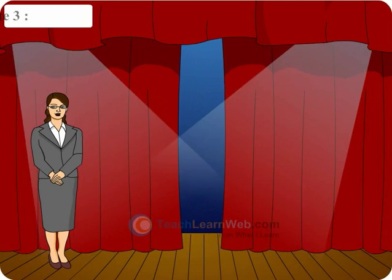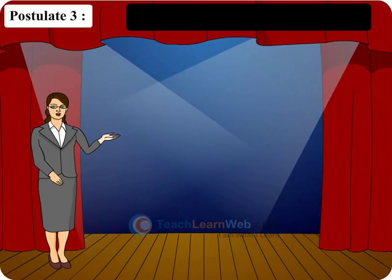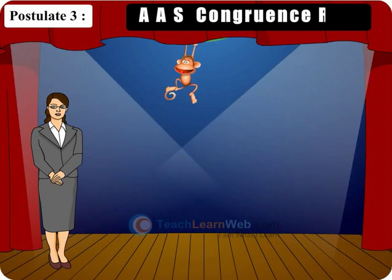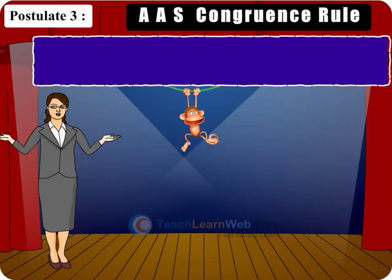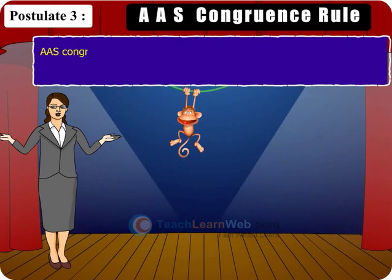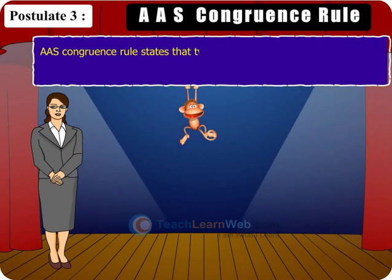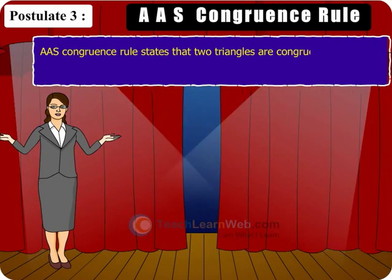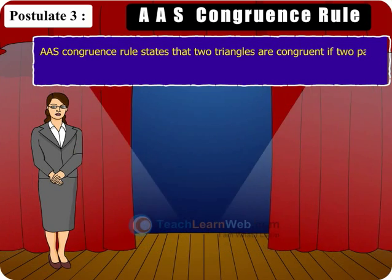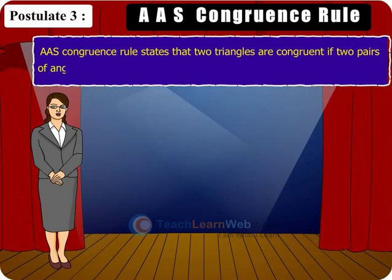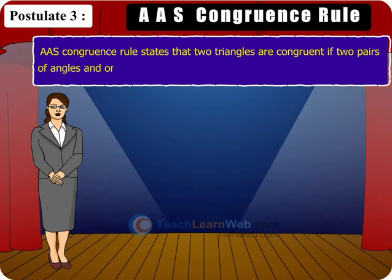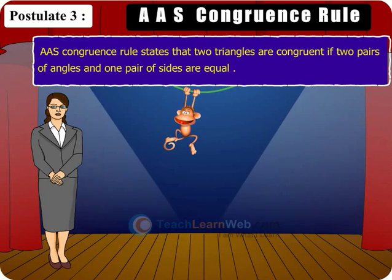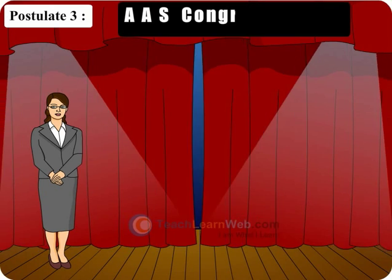Postulate 3: AAS congruence rule. The AAS congruence rule states that two triangles are congruent if two pairs of angles and one pair of sides are equal. Children,